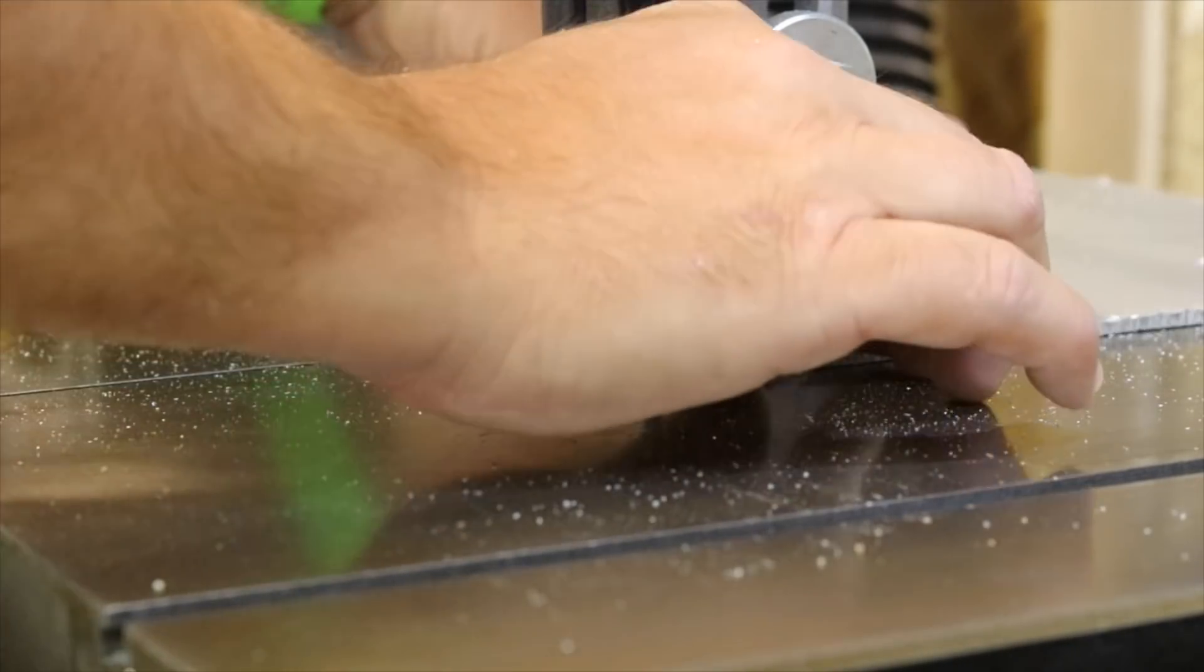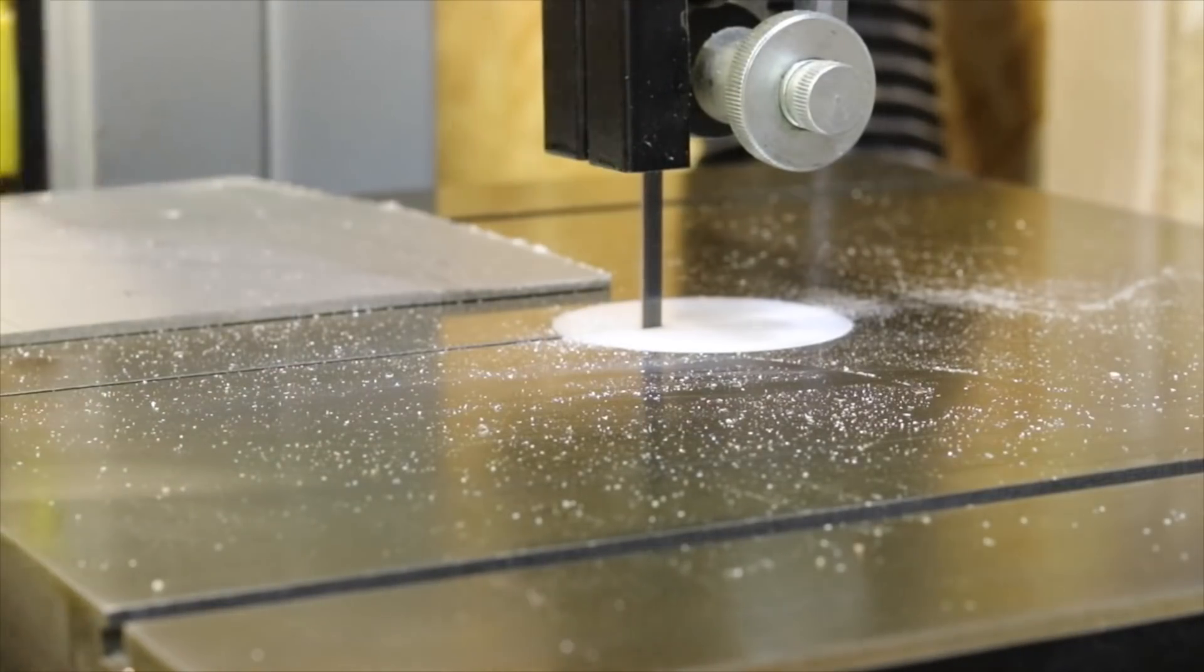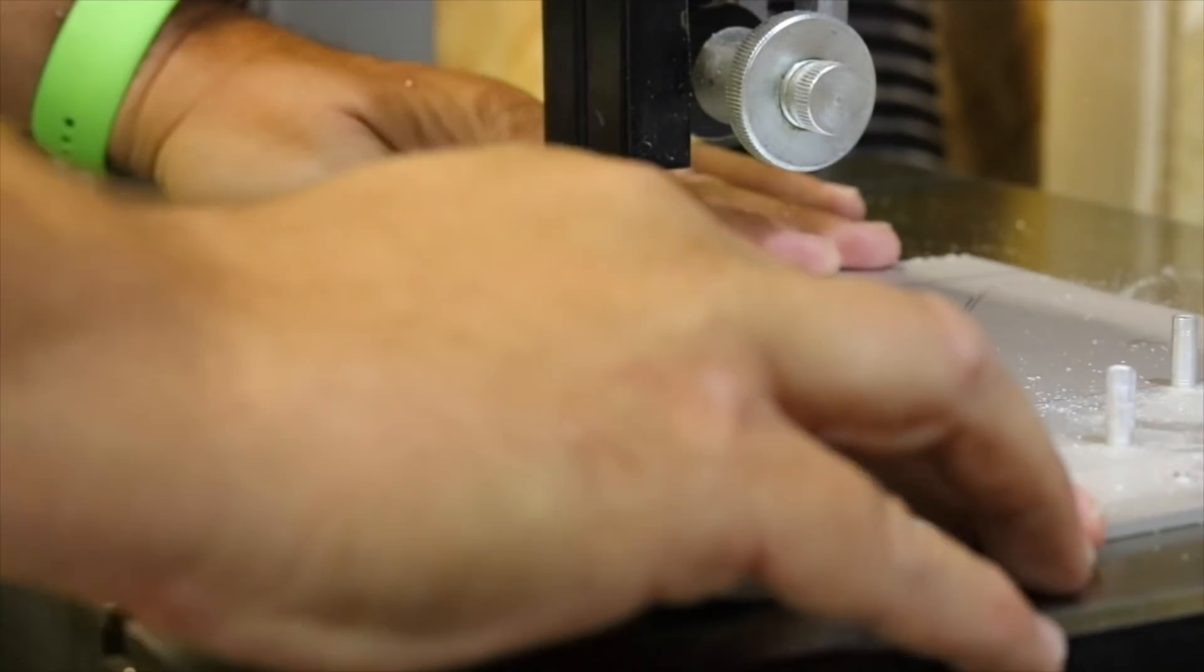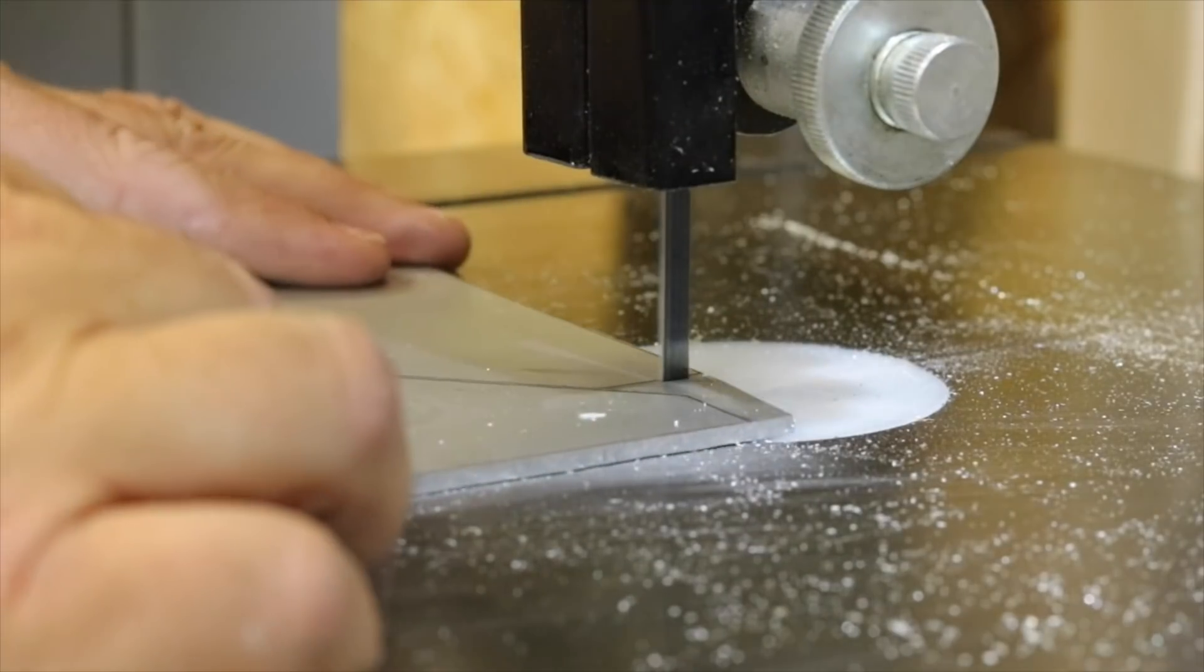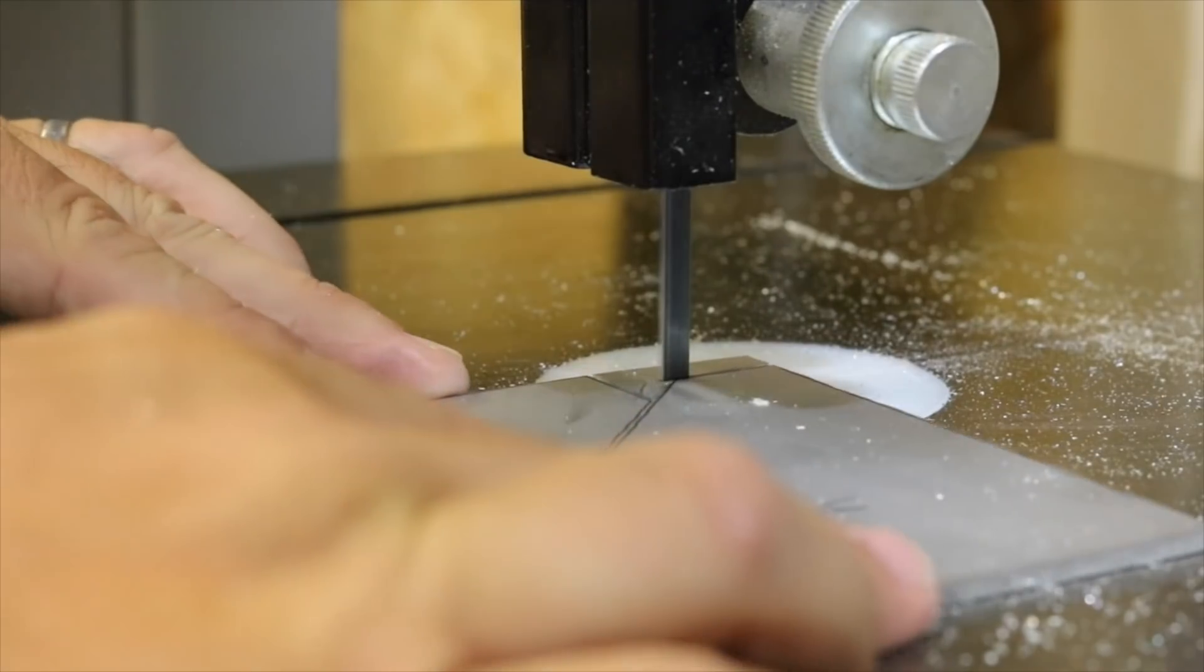So this is a bi-metal blade and it cuts through the aluminum very well. I'm able to easily cut these templates out. I think it's about three or four mil thick aluminum.